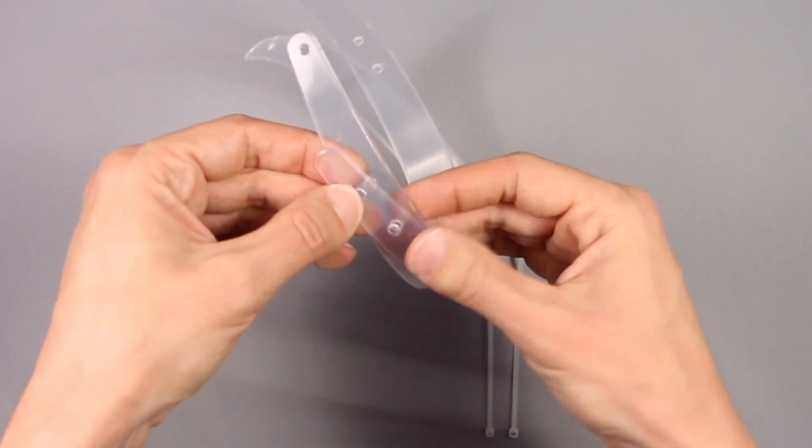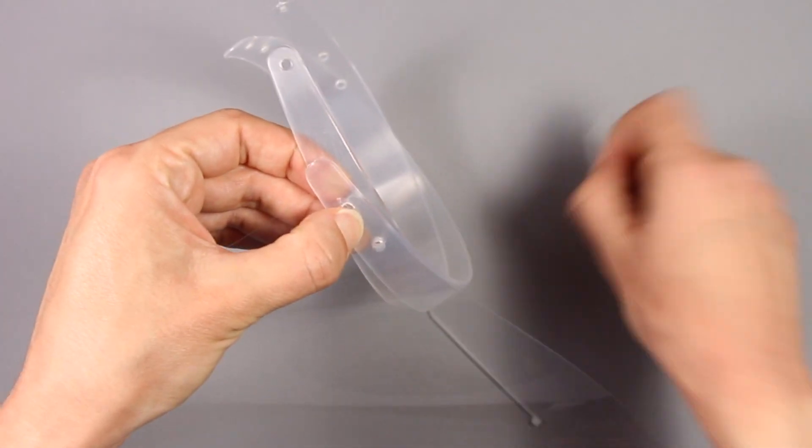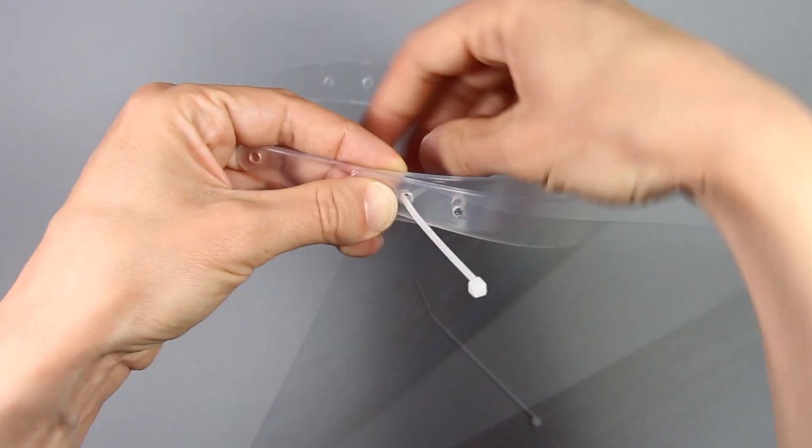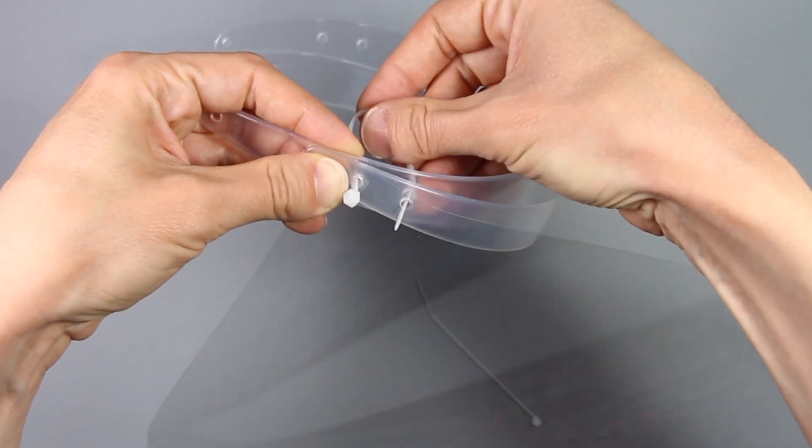Align the headband holes with the holes in the plastic. Insert the zip tie through the shield plastic and the two headbands from the outside. Pull the zip tie through and insert it back through the other hole.